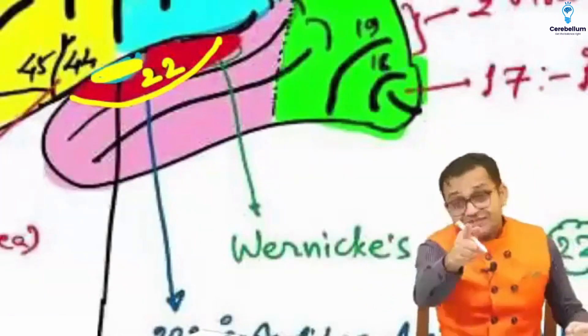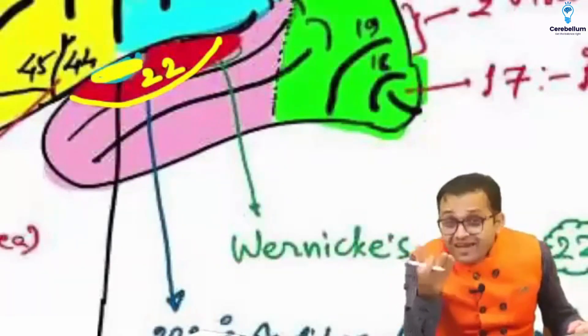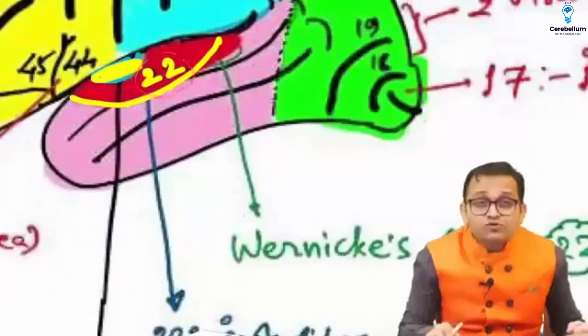And then we will think. You are doing the interpretation. You are doing the analysis. This is done in the area number 22.